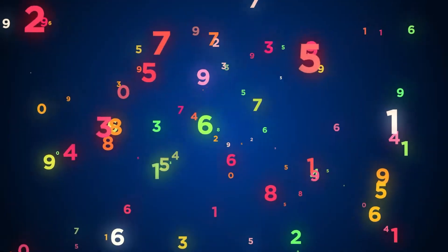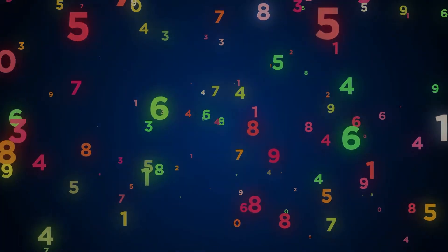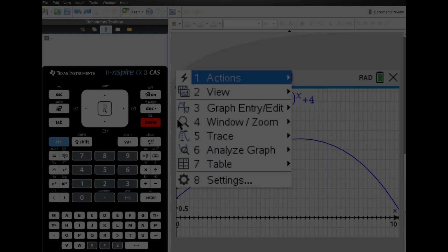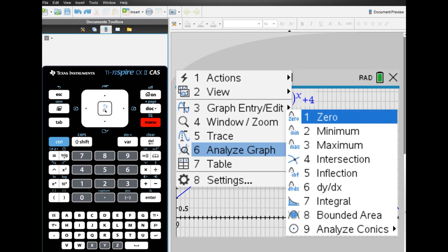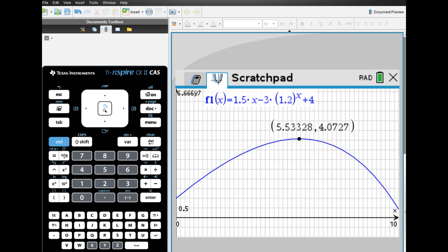8. Sequences. When solving sequence problems, you may need to find the maximum value. For instance, consider the sequence a_n equals 1.5n minus 3 times 1.2 to the power of n plus 4, and suppose you want to find the maximum value. Let's say we found the maximum value on the graph to be approximately x equals 5.533, which corresponds to a of n 4.0727.